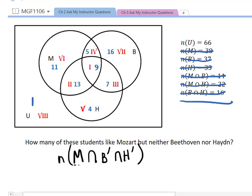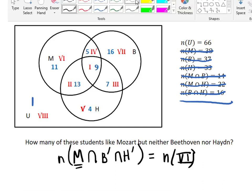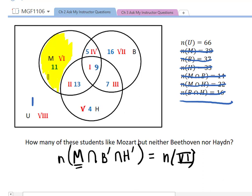Okay. But what are we describing? We're describing the elements that are in set M, but don't overlap with B or H. The only region that fits that description is region six, students who like Mozart, but are not part of the group that like Haydn and they're not part of the group that like Beethoven. So just this chunk right here. So that's going to be 11, 11 students that fall into that description. I hope you found this video helpful. If you did, please remember to give it a like. That helps other students to find the video.